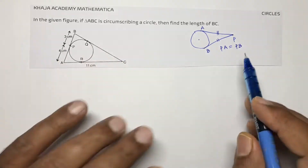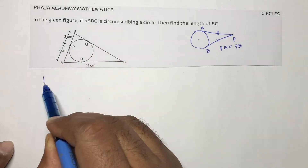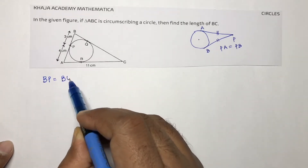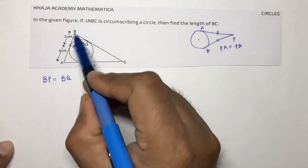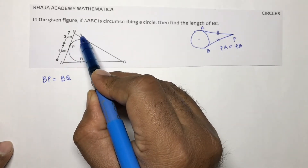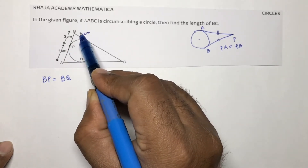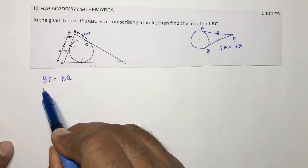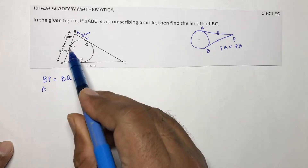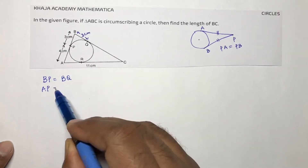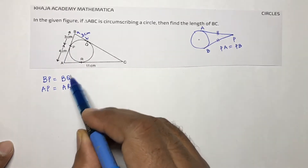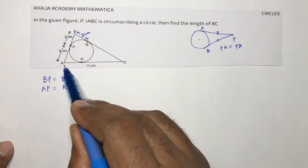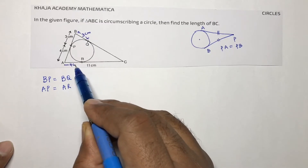Using this property: BP equals BQ, so if BP is 3 centimeters, BQ will also be 3 centimeters. Next, from external point A, AP equals AR — so if AP is 4 centimeters, AR will also be 4 centimeters.